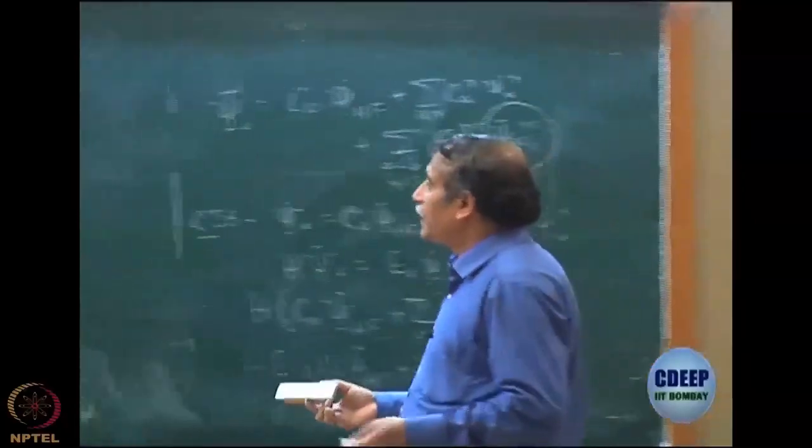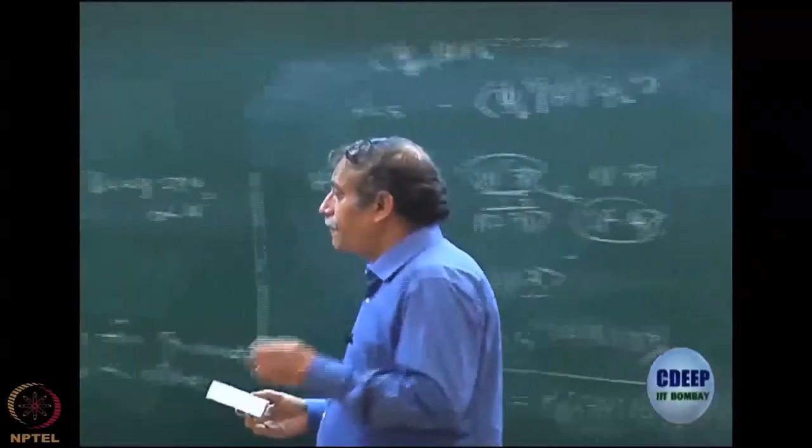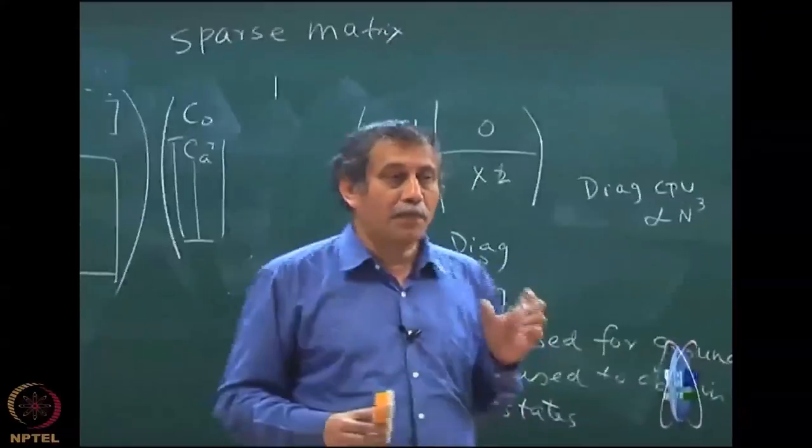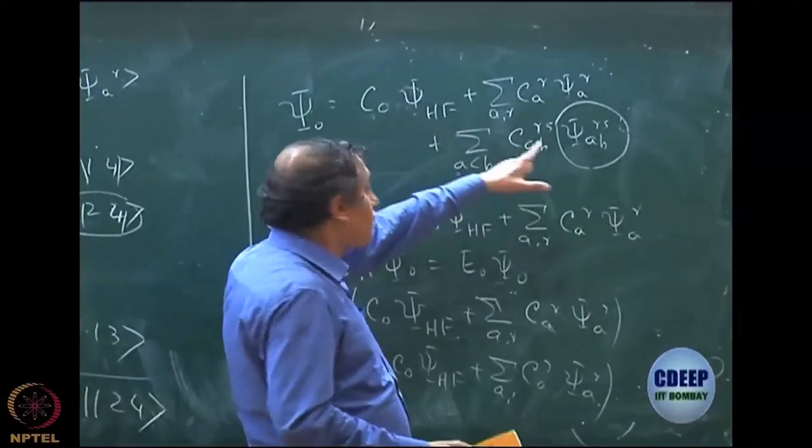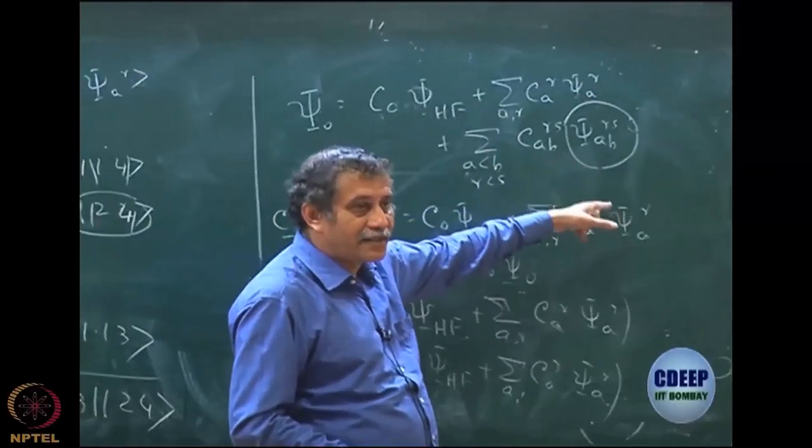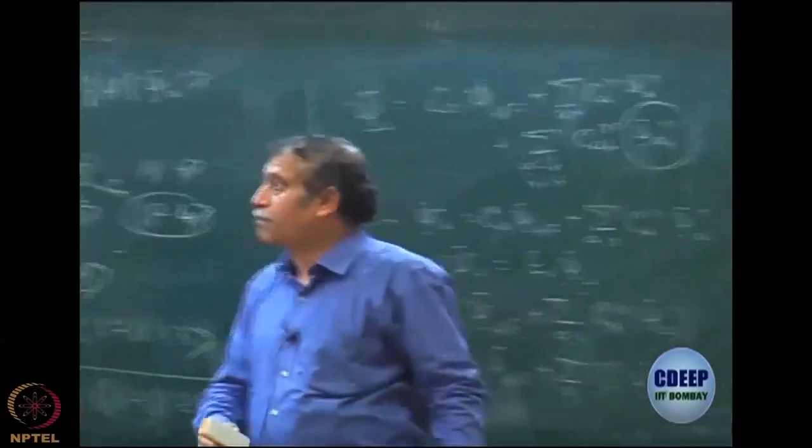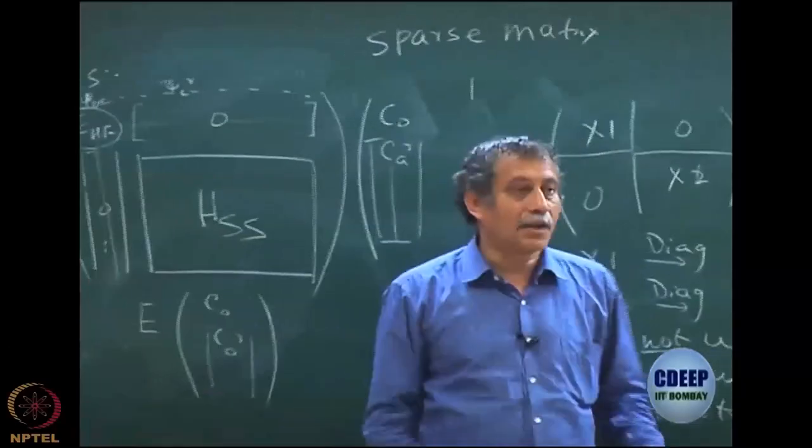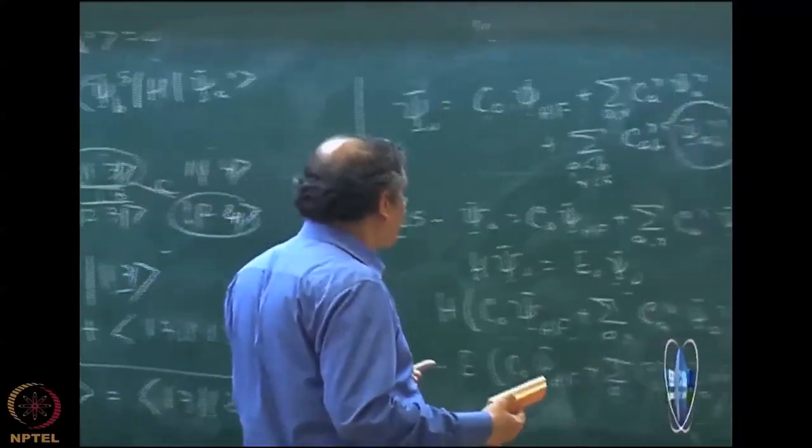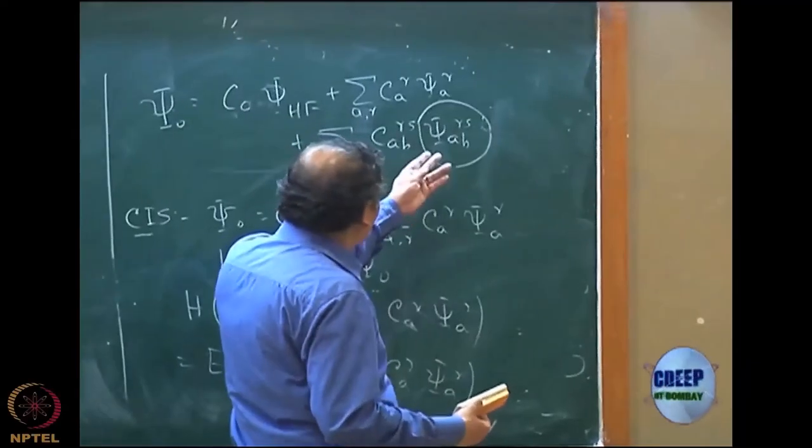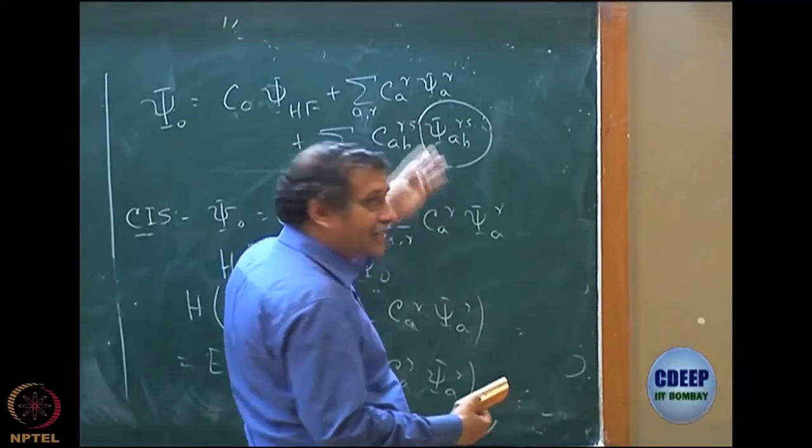What we have to do however is for ground state, the first set of determinants that we must include is actually double excitations, because there is no Brillouin's theorem between Hartree-Fock and double excited determinants. So now this block will not be zero and obviously ground state will start to improve by interaction with the double excited determinants. You can do ground state double excited and then singly excited. You will see then the singly excited contribute.